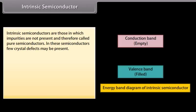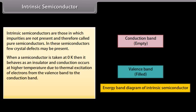Intrinsic semiconductors are those in which impurities are not present and are therefore called pure semiconductors. In these semiconductors, a few crystal defects may be present. When a semiconductor is taken at zero Kelvin, it behaves as an insulator, and conduction occurs at higher temperatures due to thermal excitation of electrons from the valence band to the conduction band. Examples include germanium and silicon.